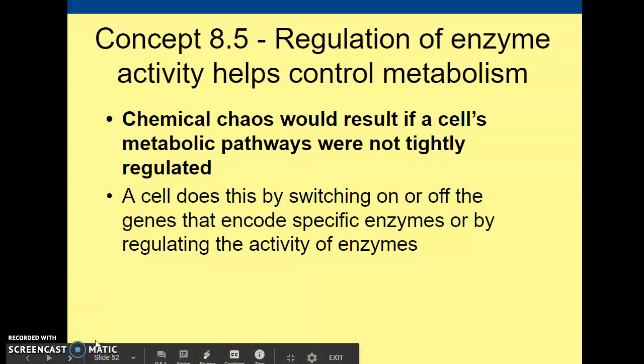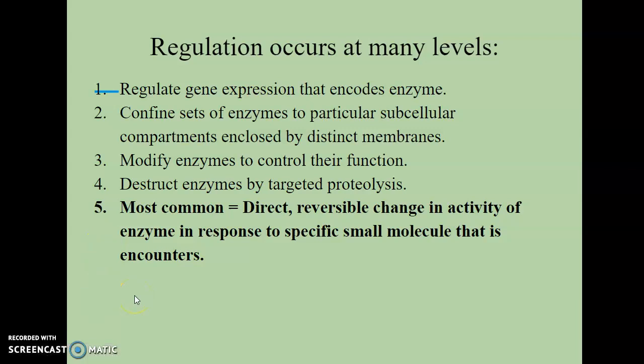Regulation can occur on many different levels. One is regulating the gene expression of the gene that encodes for the enzyme — if we no longer need an enzyme, we can turn the gene off. The second way is to confine enzymes into particular subcellular compartments enclosed by distinct membranes, having the correct enzyme work in the correct organelle — for example, pyruvate dehydrogenase confined to the mitochondria. The third is to modify enzymes to control their function. The fourth is to destroy enzymes by targeted proteolysis, destroying the protein using proteases and water. And the fifth way, which is the most common, is a direct reversible change in the activity of the enzyme in response to a specific molecule it encounters.